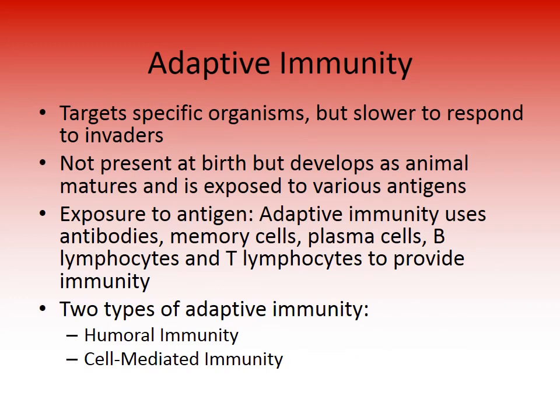Adaptive immunity targets a specific organism but is slower to respond. It is not present at birth but develops as the animal matures and is exposed to various antigens. Adaptive immunity uses antibodies, memory cells, plasma cells, B lymphocytes, and T lymphocytes. There are two subcategories: humoral immunity and cell-mediated immunity.